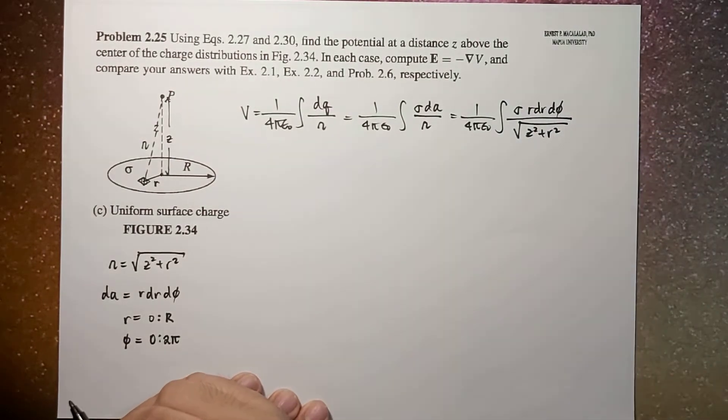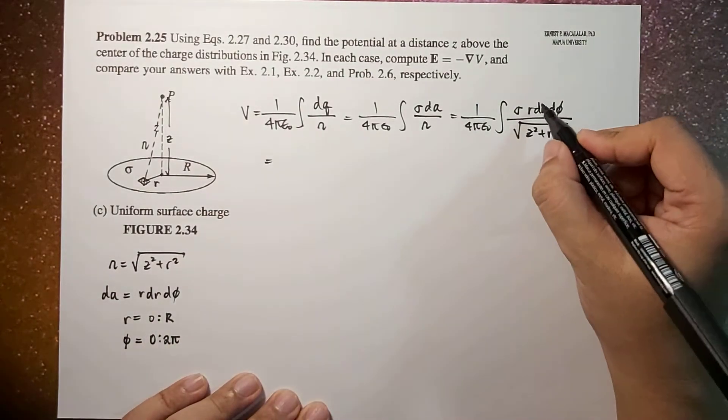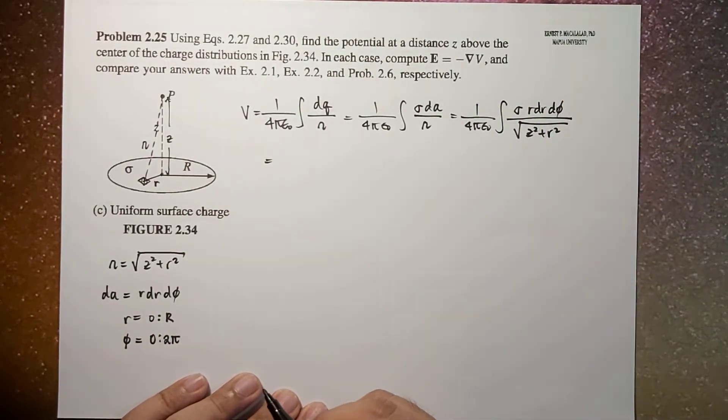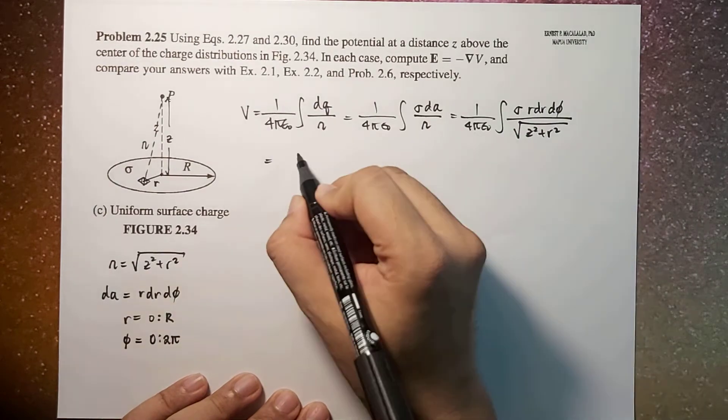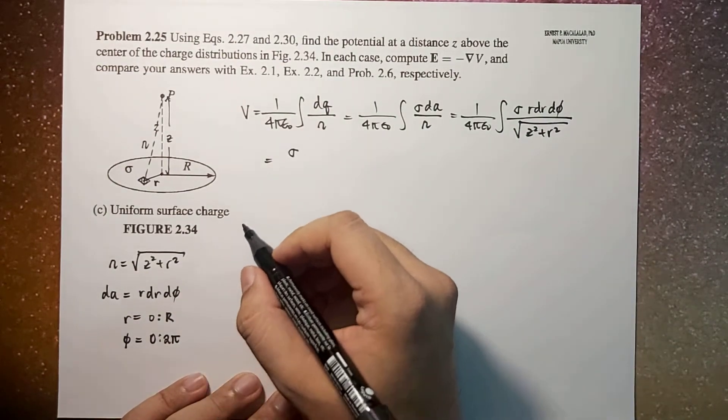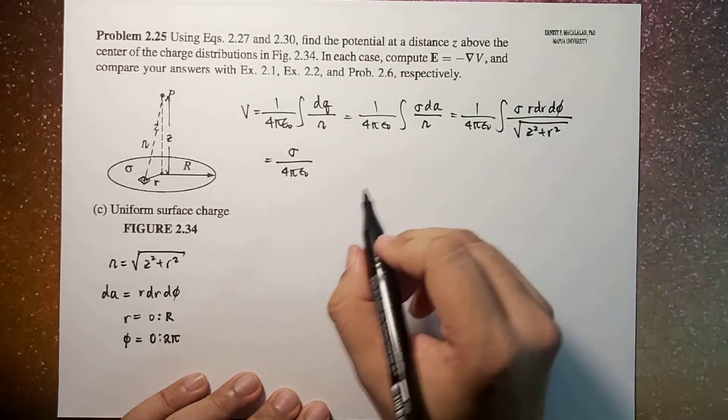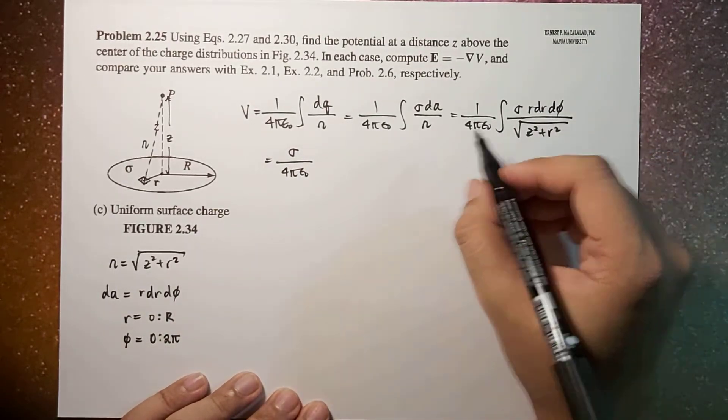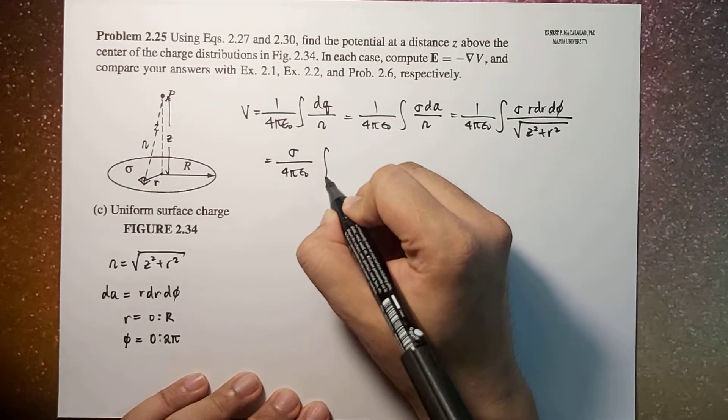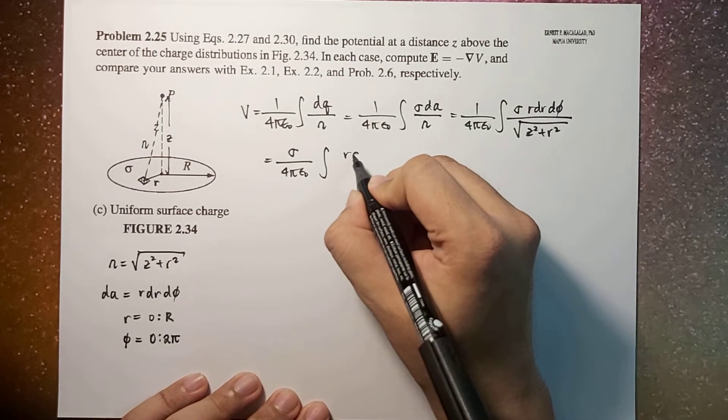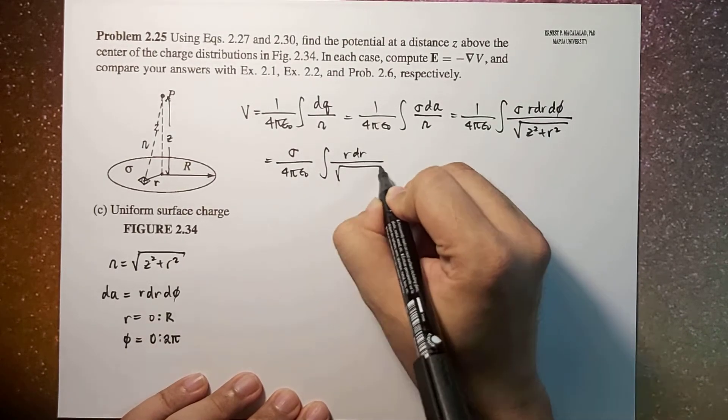Here we have a double integral. Sigma can be taken out of the equation divided by 4π epsilon naught, then we can separate the two integrals. This becomes integral of r dr over square root of